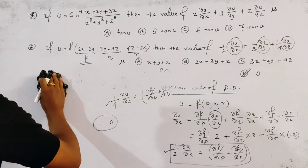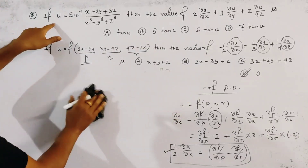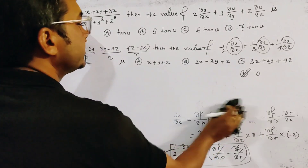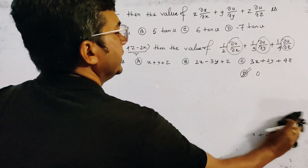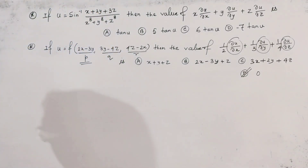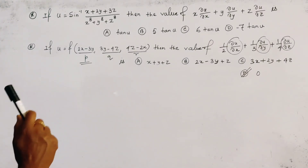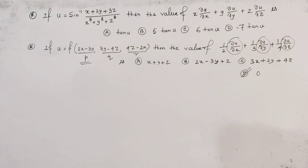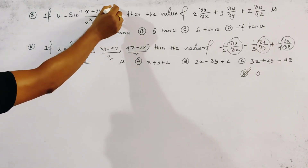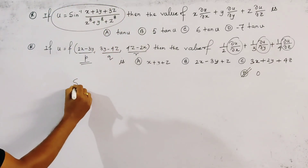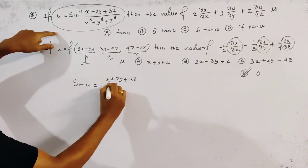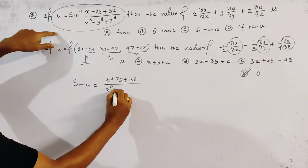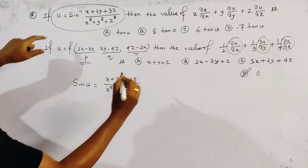Now we go to the first problem. It is given that u = sin⁻¹[(x + 2y + 3z) / (x⁸ + y⁸ + z⁸)]. Then we need to find the value of x ∂u/∂x + y ∂u/∂y + z ∂u/∂z, given by four options. We first write sin(u) = (x + 2y + 3z) / (x⁸ + y⁸ + z⁸).